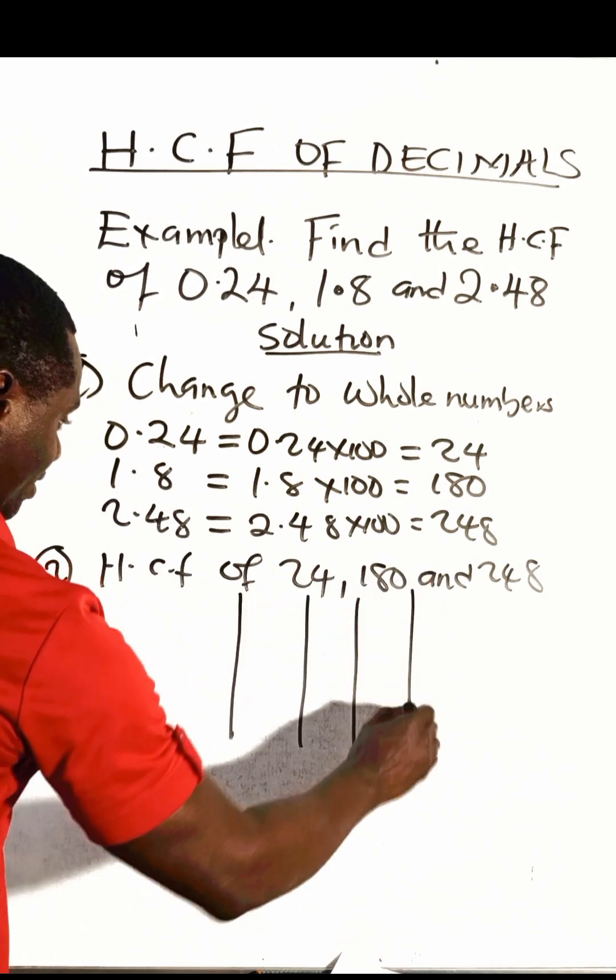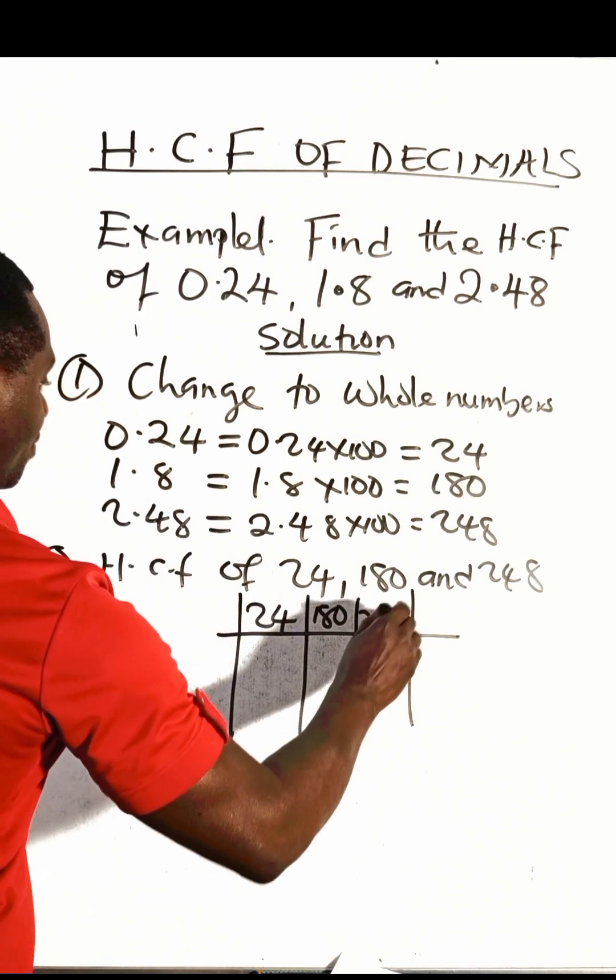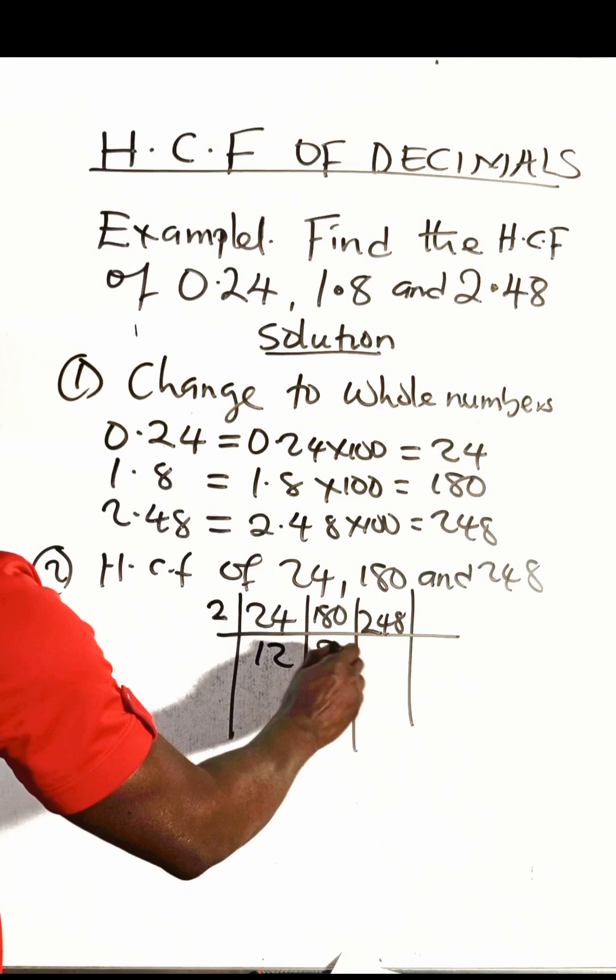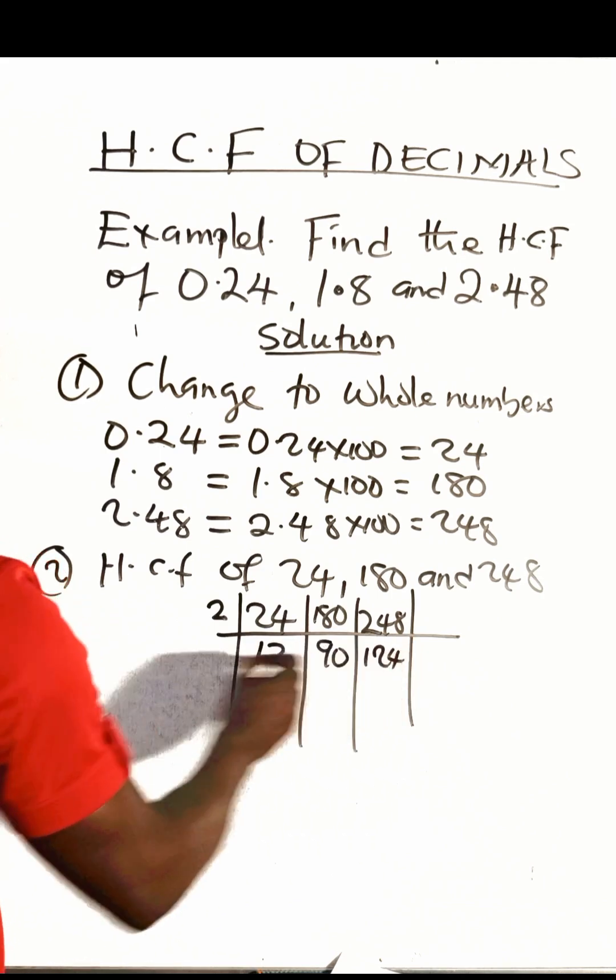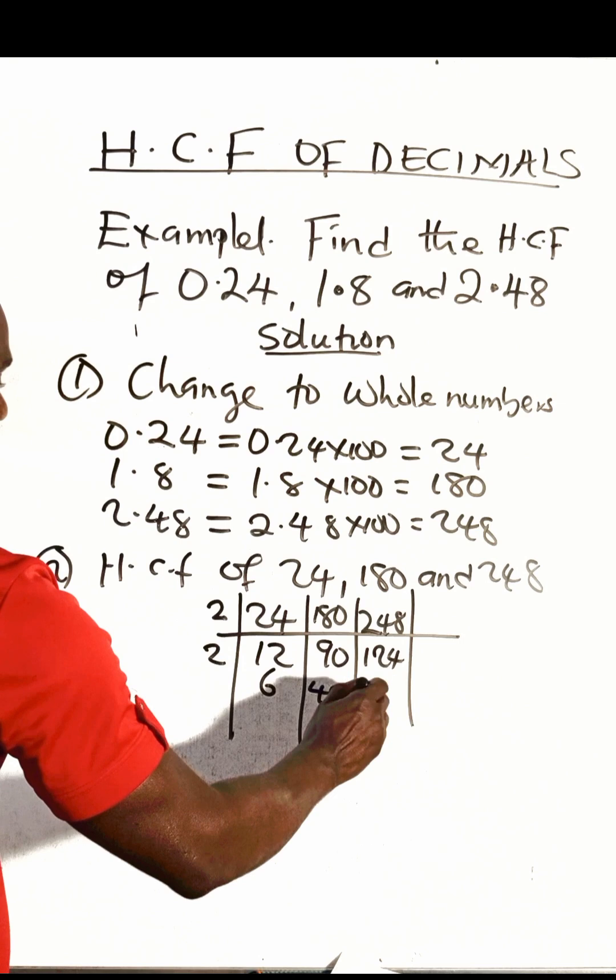Let's start with 2 to divide these numbers. We have 12, 90, 124. You can still use 2 here. We have 6, 45, and 62.